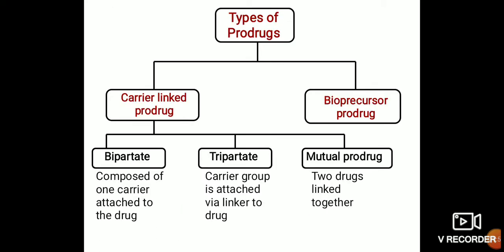Now we will discuss the types of prodrugs. The first type is carrier-linked prodrugs and the second is bioprecursor prodrugs. Carrier-linked prodrugs are divided into three parts: bipartite, tripartite, and mutual prodrugs.